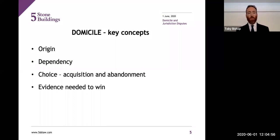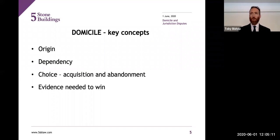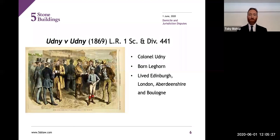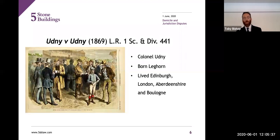The three things you need to know about domicile are: there's a domicile of origin — everybody has one; some people have a domicile of dependency which changes from their domicile of origin; and then there's a domicile of choice, which is probably the main battleground — it can be acquired and it can be abandoned. We'll also look at the types of evidence you need to win these cases. The first case we're going to look at is Colonel Whitney's case — it's a bit modern for a Chancery case at 1869.